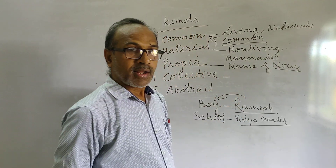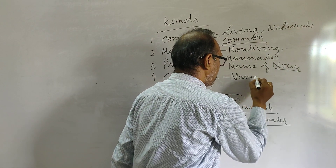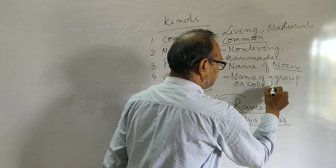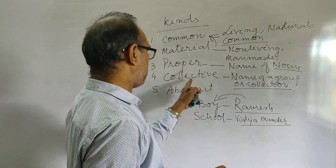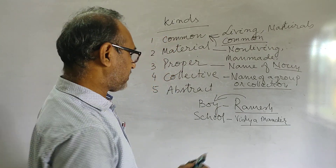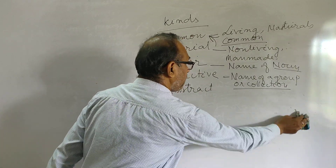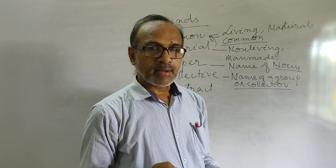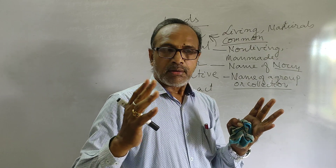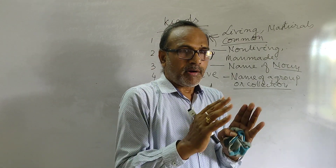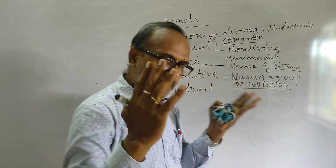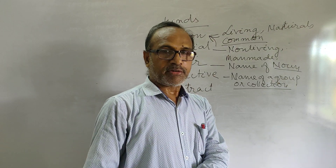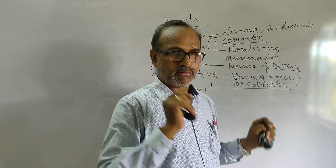Let us come to collective noun. A collective noun is a name of a group or a collection. For example, a group of students is called a class, a group of soldiers is called an army, a group of family members is called a family, and an association of people is called a committee. So there will be many people, but when they are together, the name will be different, and by that name we understand that particular group — that is called a collective noun.